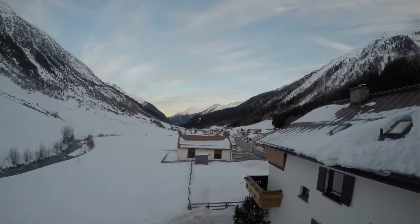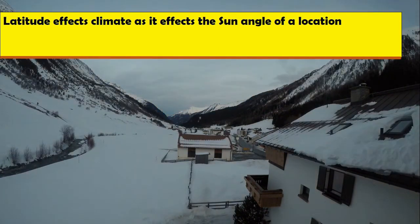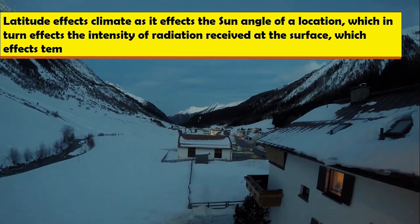So in conclusion, latitude affects the climate system of a place as it affects the sun angle of a location, which affects the intensity of radiation at the surface, which affects temperature.